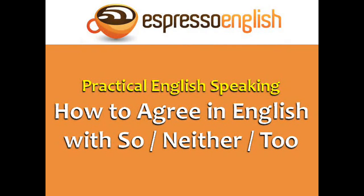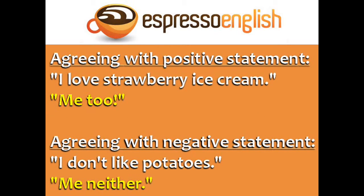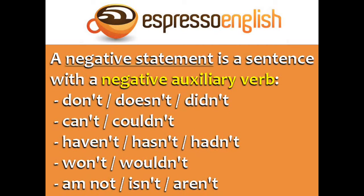Practical English speaking: how to agree in English with 'so', 'neither', and 'too'. The easiest way to agree is to say 'me too' in response to a positive statement, or 'me neither' in response to a negative statement. For example, if someone says 'I love strawberry ice cream' and you agree, you can say 'me too'. If someone says 'I don't like potatoes' and you agree, you can say 'me neither'.